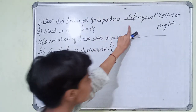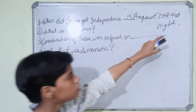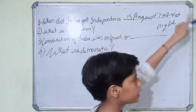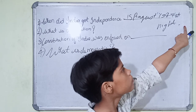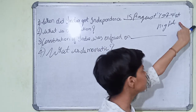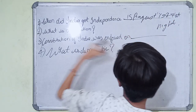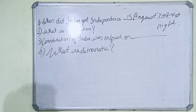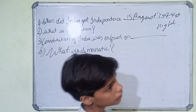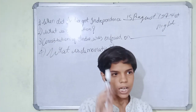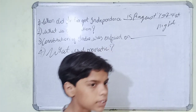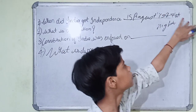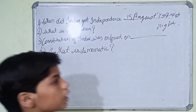So, 15 August 1927 at night. If you can remember, it's 14 August 1927 at night — that is the region India got independent.